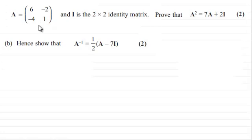We were asked to prove that A squared equals 7A plus 2I. Now in this question we're told to hence show that the inverse of A equals half of A minus 7I for two marks.